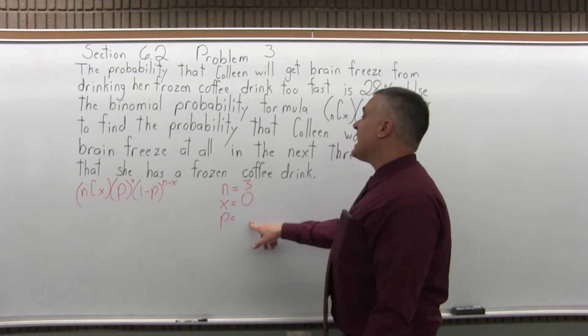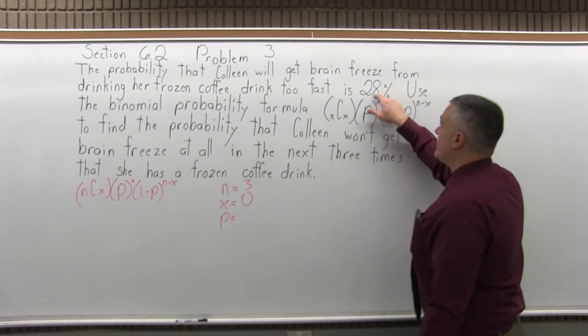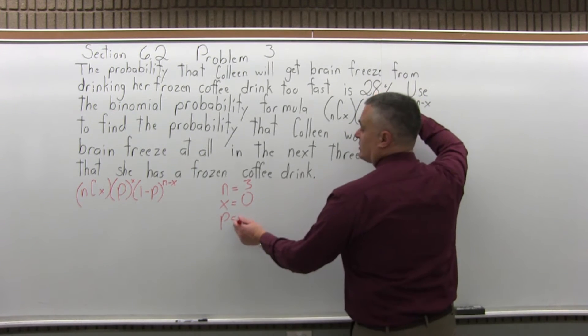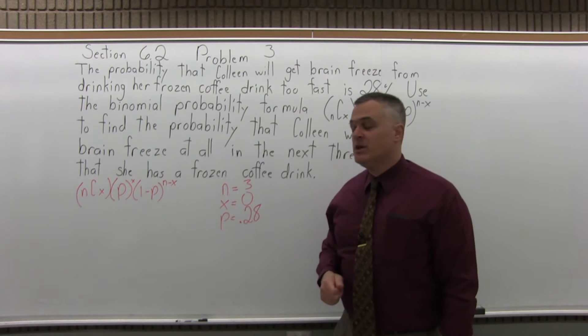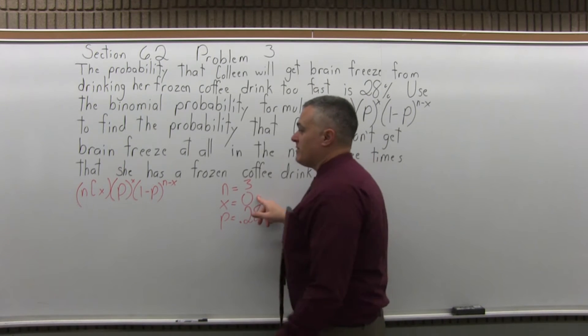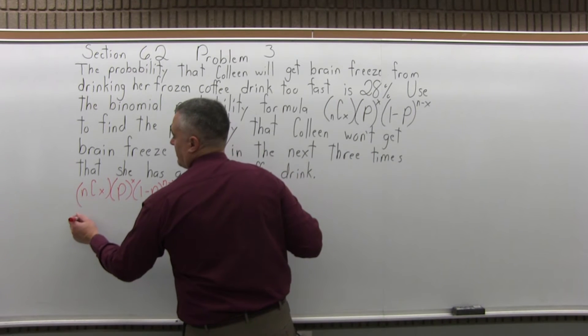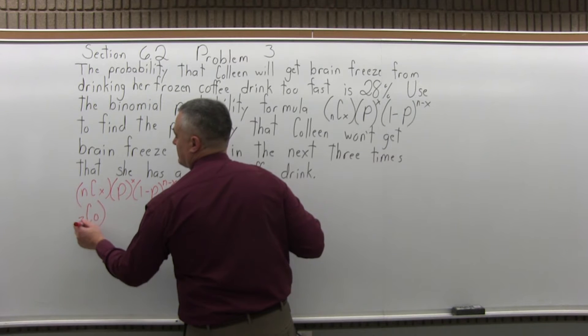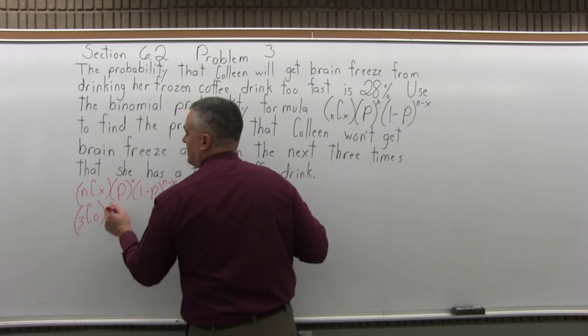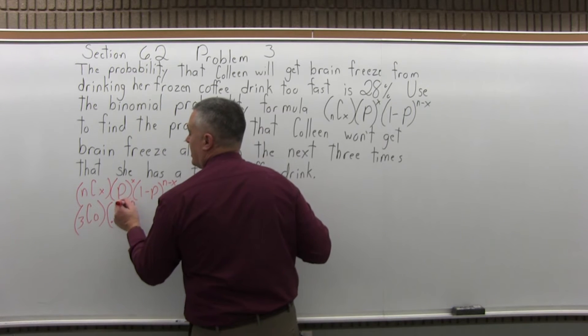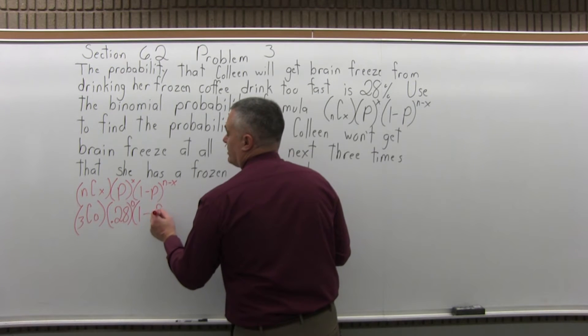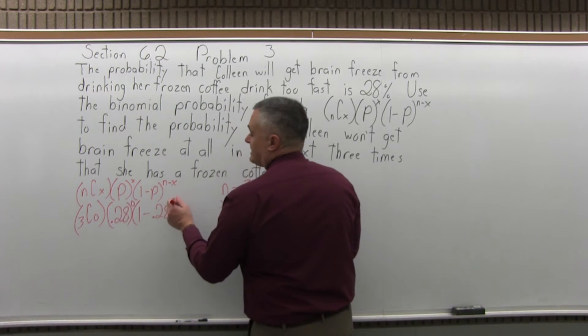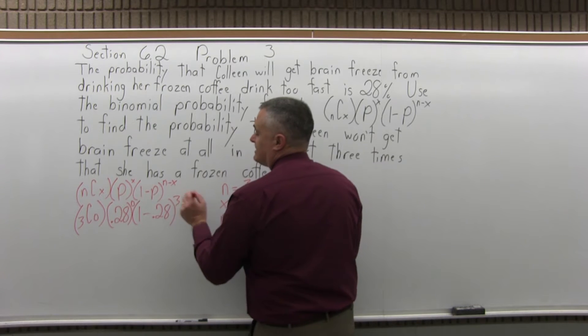And probability of success as a decimal, 28% will be entered into the formula as .28. It's important that you put it in as a decimal. So now, as we fill these in, n combination x will become 3 combination zero, p to the x will be .28 to the zero, and then 1 minus p is 1 minus .28 to the n minus x power will be 3 minus zero.